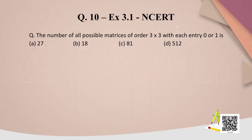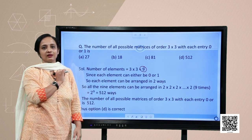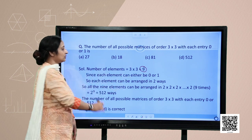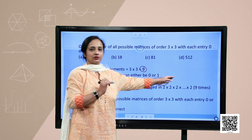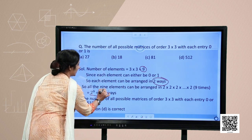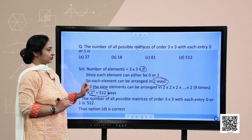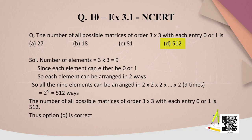One more question from the HOTS category: the number of all possible matrices of order 3×3 with each entry 0 or 1 is? A 3×3 matrix has 9 elements in total. Since each element can be either 0 or 1, each element can be arranged in 2 ways. So all 9 elements together can be arranged in 2⁹ = 512 ways. Therefore, the number of all possible matrices is 512, making option D correct.